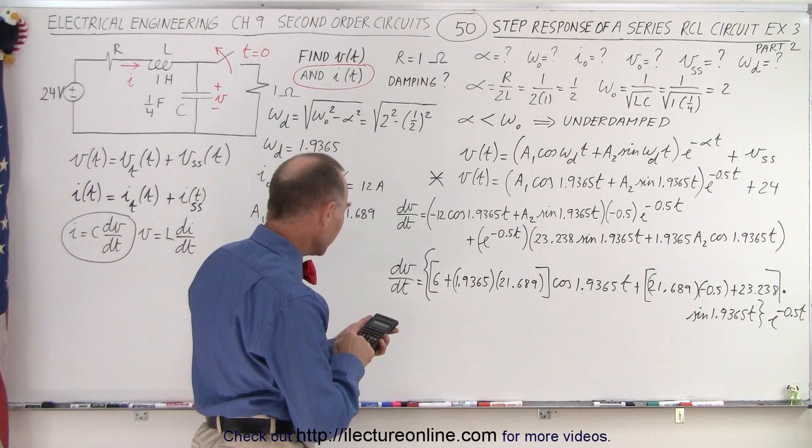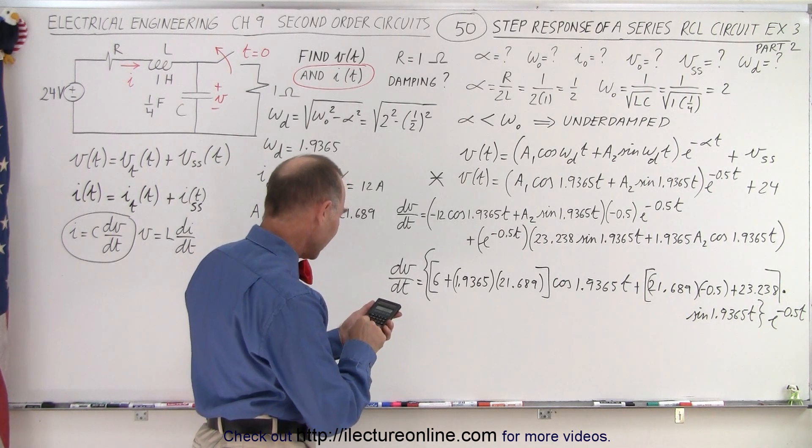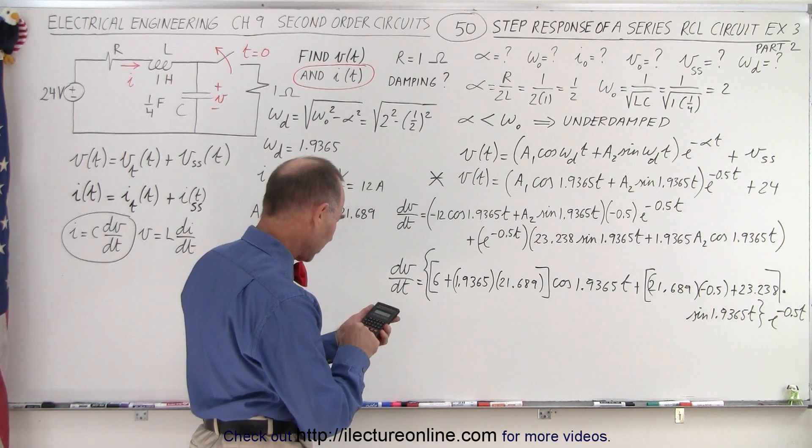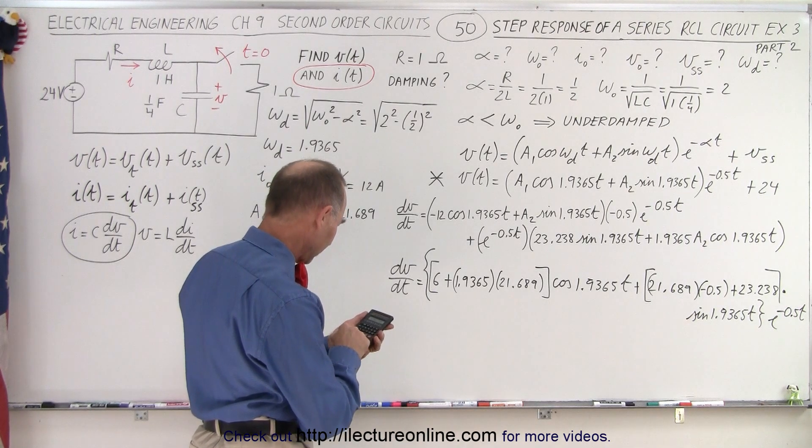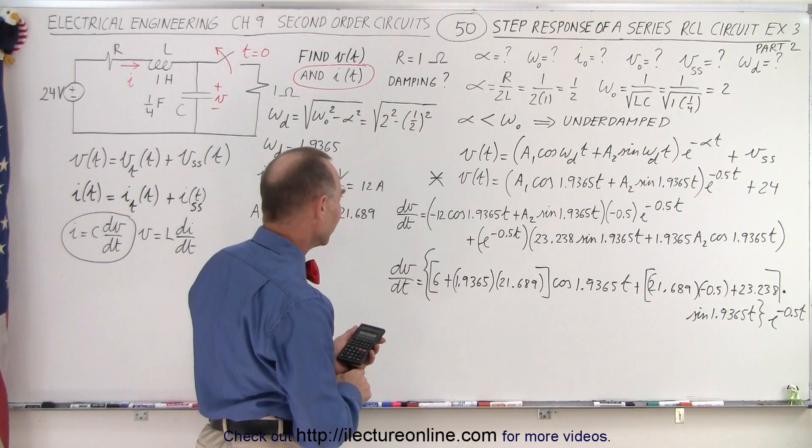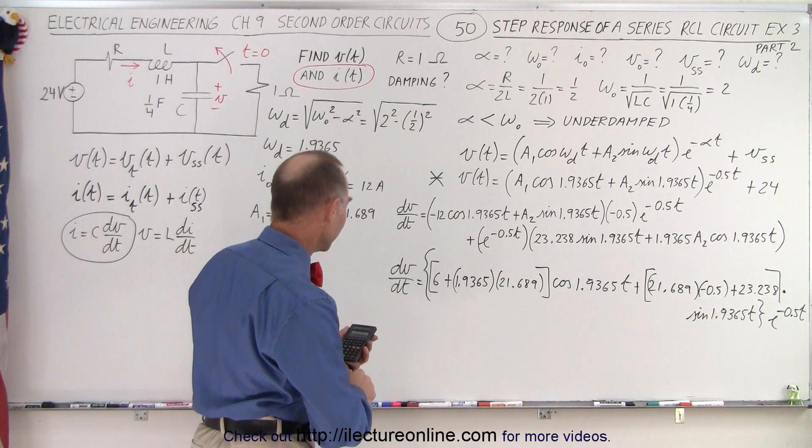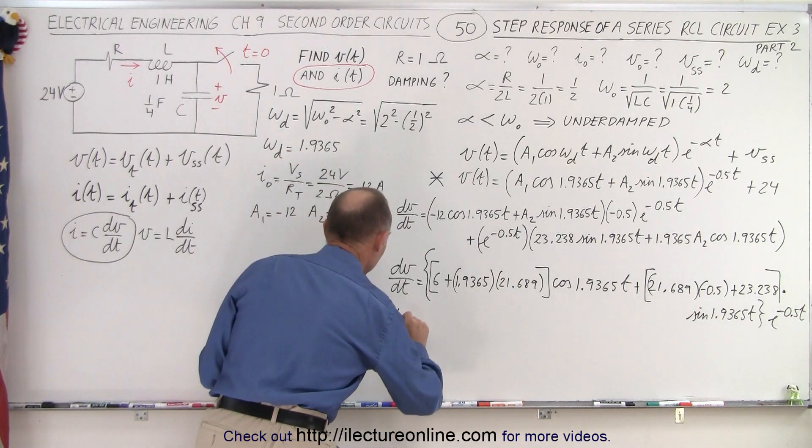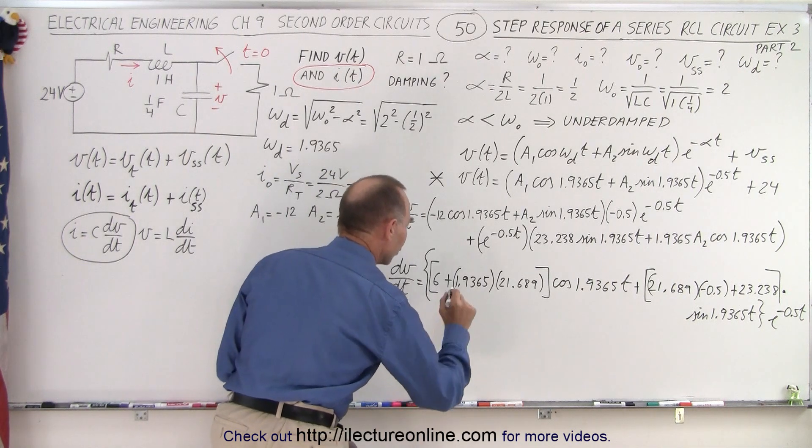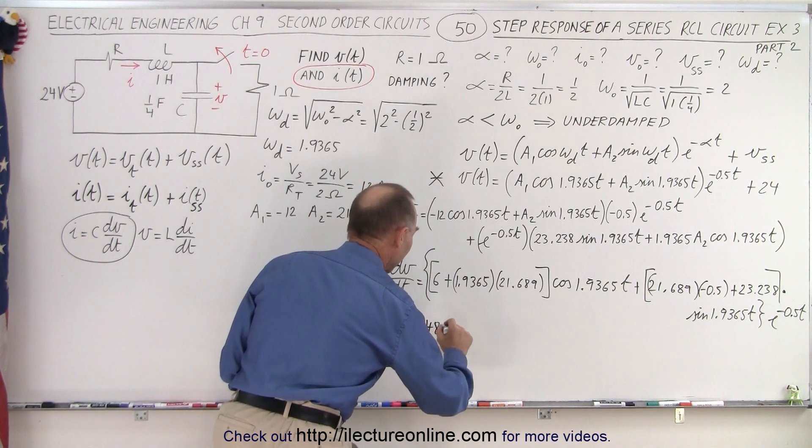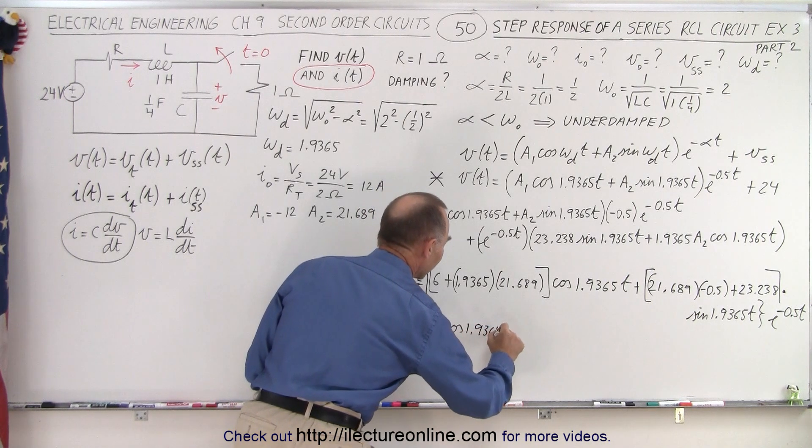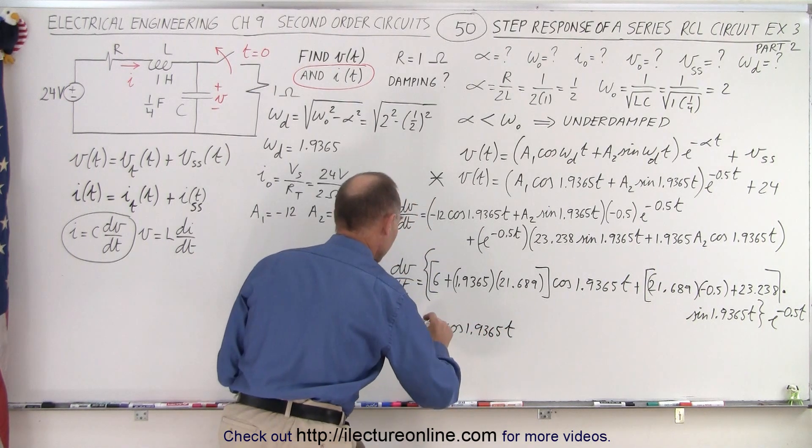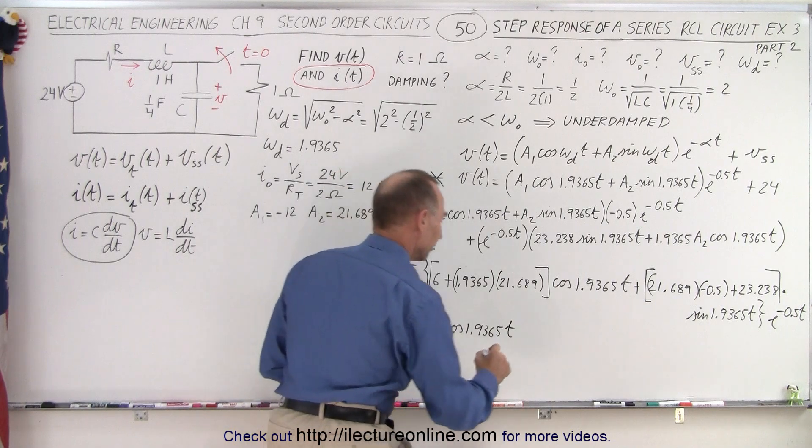Now we just have to add everything together. We have 21.689 times 1.9365. That's 42 plus 6. 48, oh, a nice round number, which is actually amazing, right? So we have dV/dt is equal to 48 times the cosine of 1.9365t, and then plus.